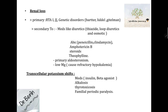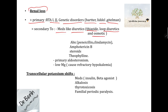Hypokalemia can also result from renal loss, which can be primary — a problem in the kidneys themselves — like renal tubular acidosis type 1 and type 2, and some genetic disorders like Bartter, Liddle, and Gitelman syndrome. Or it can be secondary, affecting the kidneys and increasing excretion of potassium, through medications like diuretics — the most common ones being thiazide, loop diuretics, and osmotic diuretics.